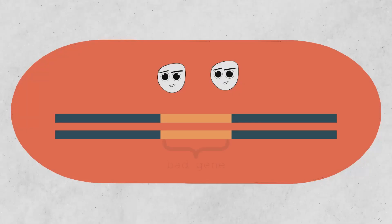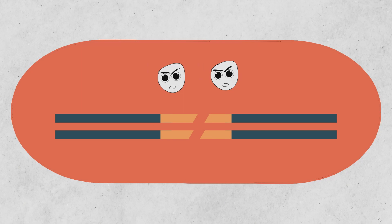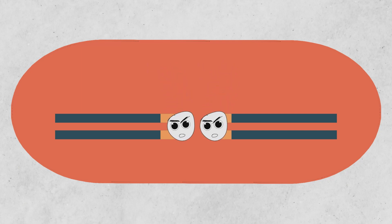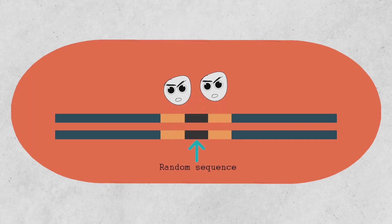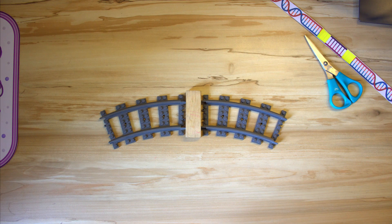Let's say we want to disable a gene that is responsible for a genetic disorder. First we cut the gene with Cas9, which triggers the DNA repair proteins. The repair proteins then trim off the broken ends and fuse them back together. This creates a random sequence at the point of edit, which often disables the gene. Think of this as creating a barrier on a broken road — the road is now completely useless.